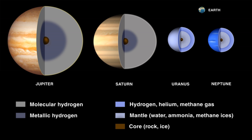Biogeochemistry is the field of study focusing on the effect of life on the chemistry of the Earth. Cosmochemistry includes the analysis of the distribution of elements and their isotopes in the cosmos. Isotope geochemistry involves the determination of the relative and absolute concentrations of the elements and their isotopes in the Earth and on Earth's surface. Organic geochemistry is the study of the role of processes and compounds derived from living or once-living organisms. Photogeochemistry is the study of light-induced chemical reactions that occur among natural components of the Earth's surface. Regional geochemistry includes applications to environmental, hydrological, and mineral exploration studies.